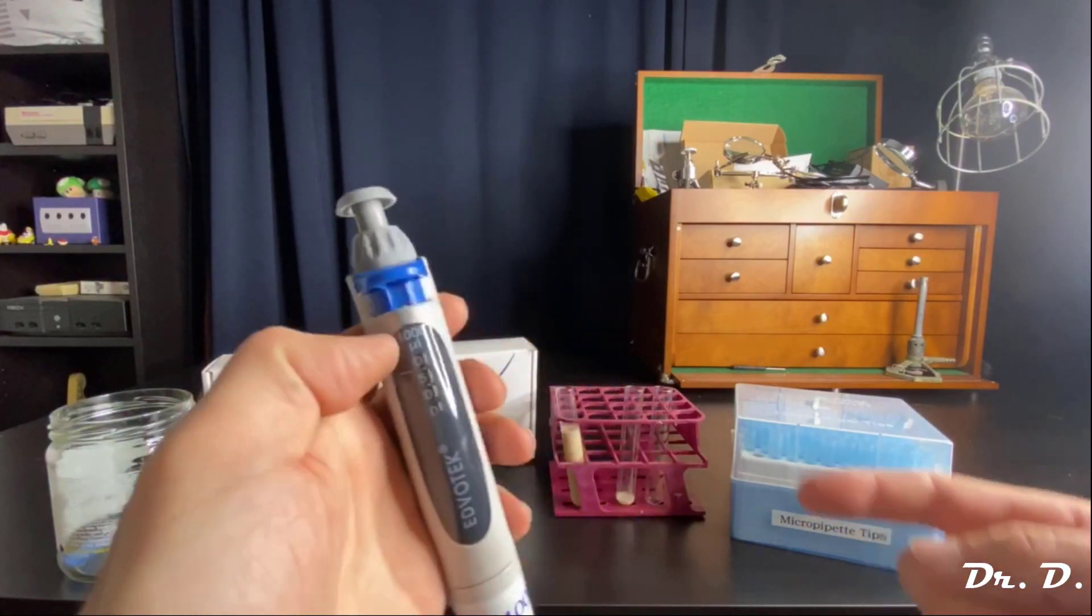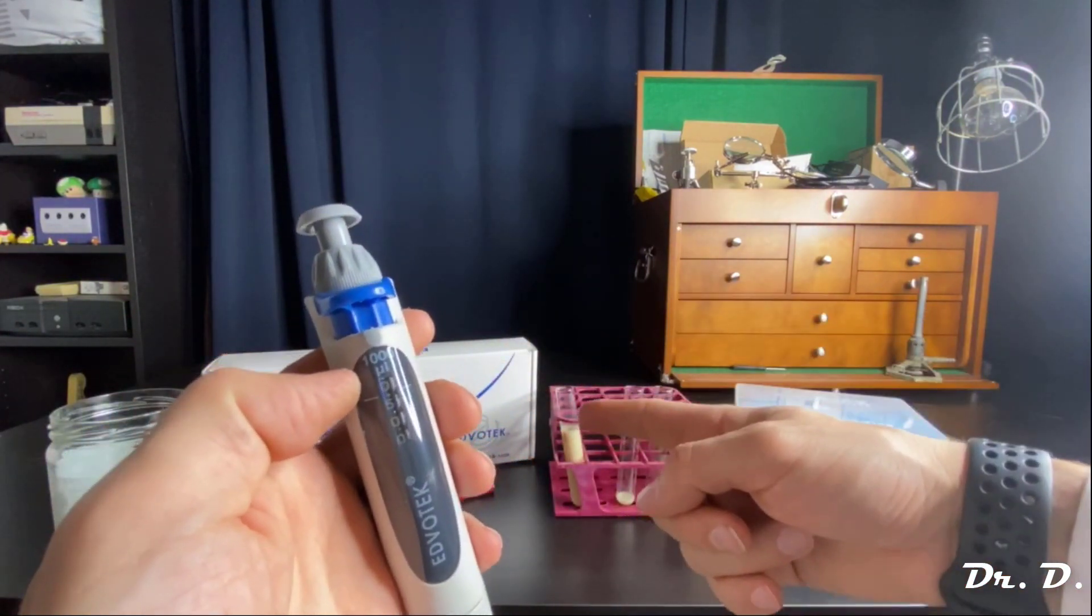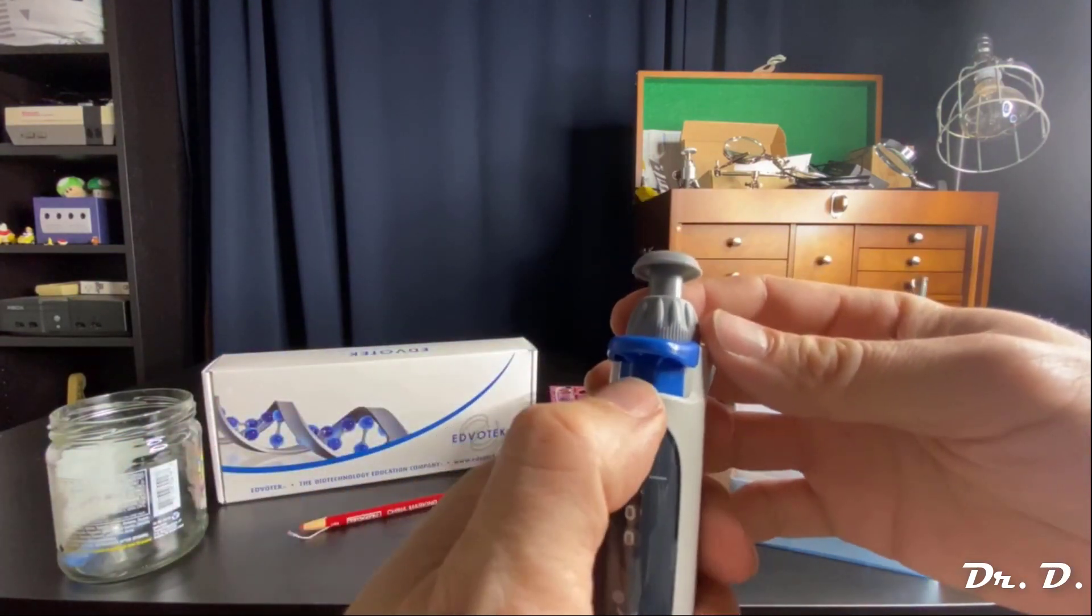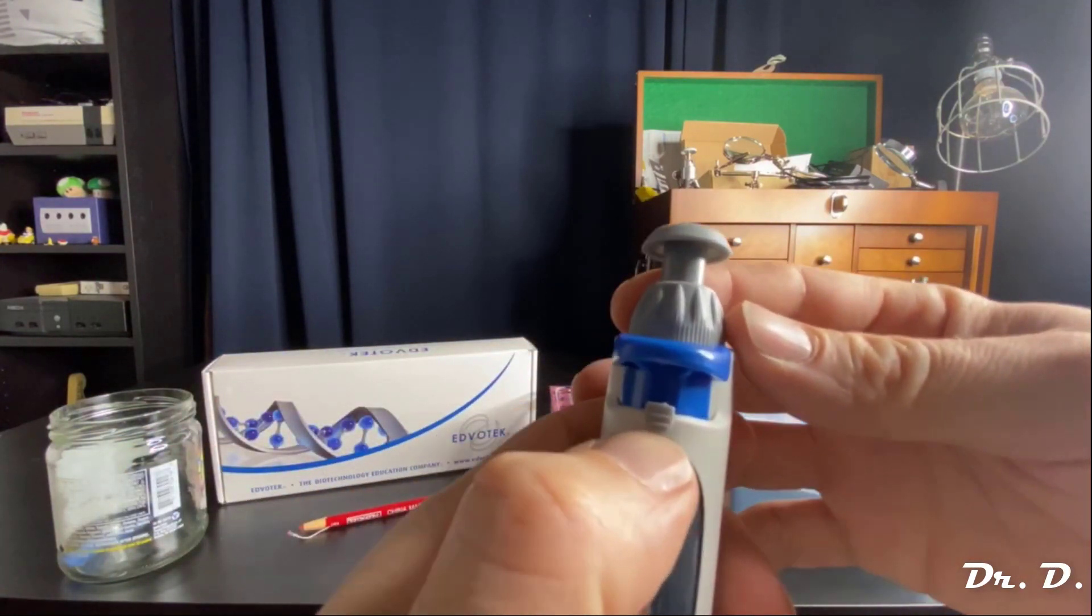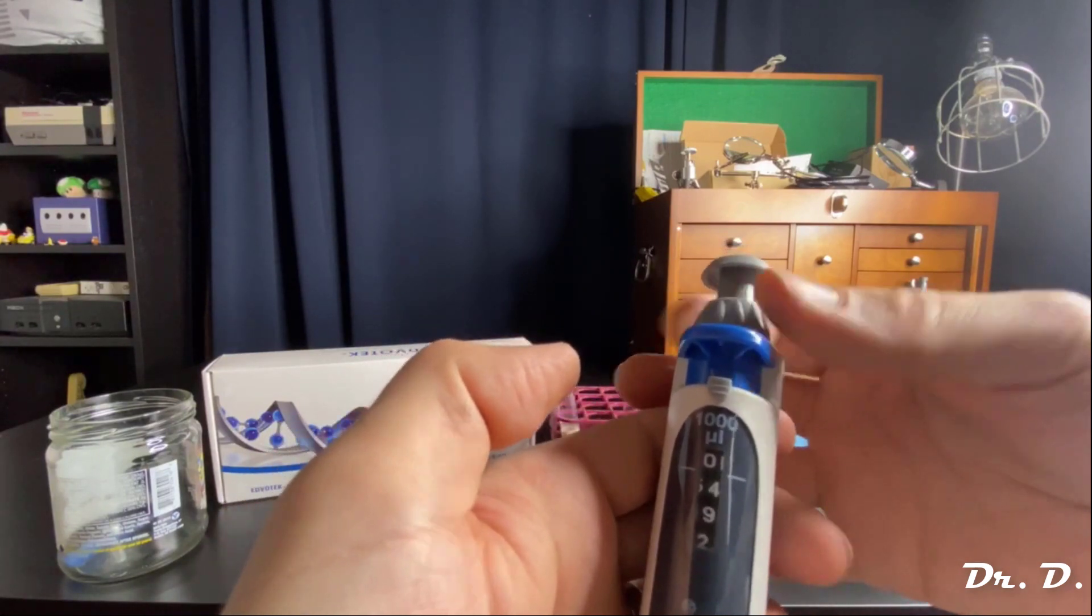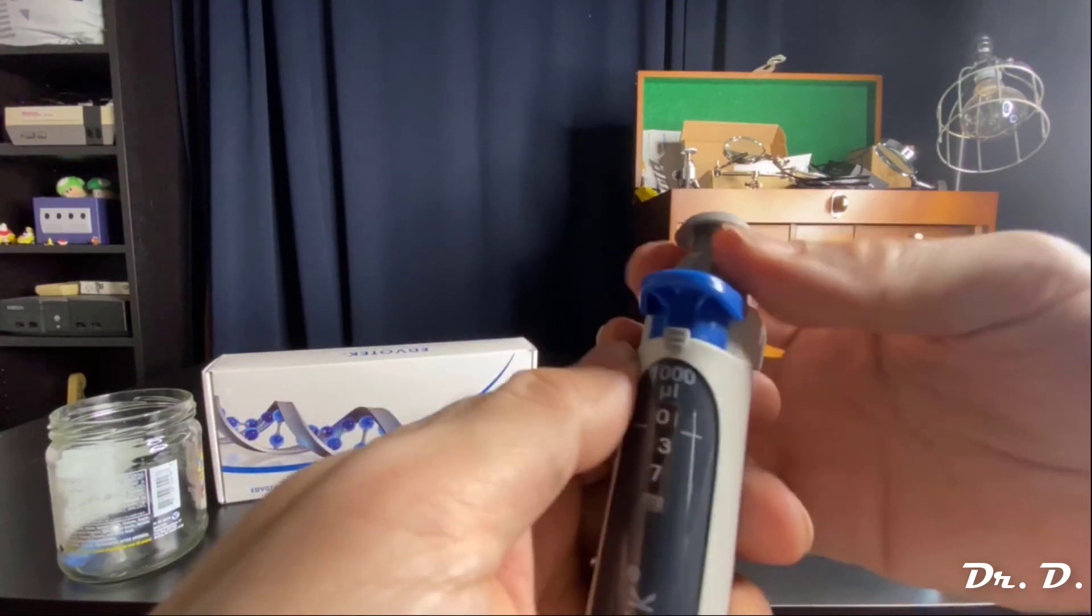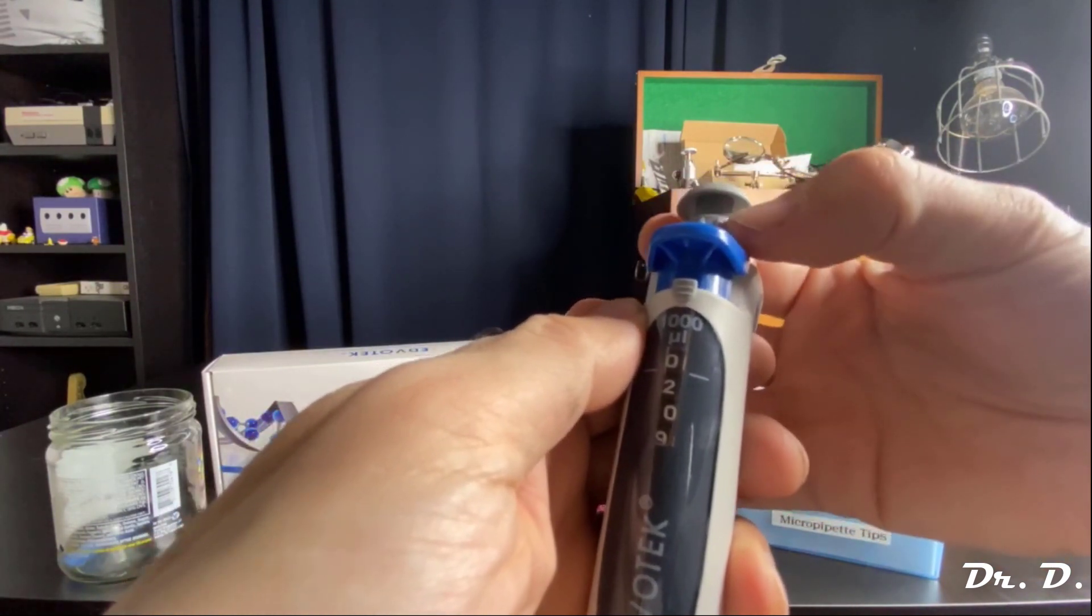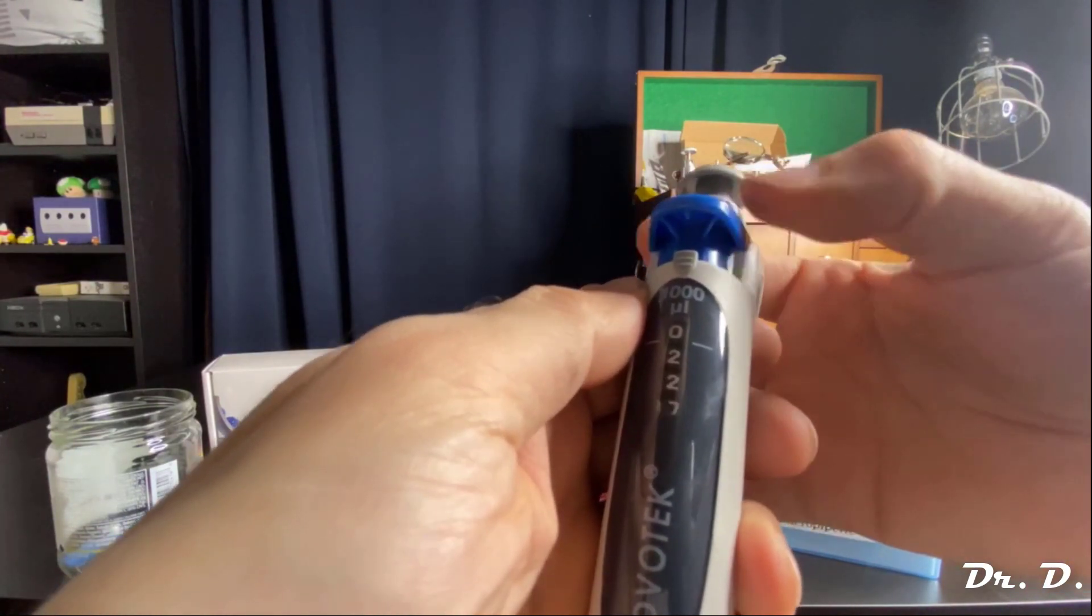Again, let's say I want to add 250 of this solution to tube three. Again, I'm going to unlock this lock button, turn it downwards, because I'm at 500, I want to turn it downwards to 250. And remember, the lowest I can go is 100 microliters. So zero, one, zero, zero. So I went too far. So I want to get to 250.